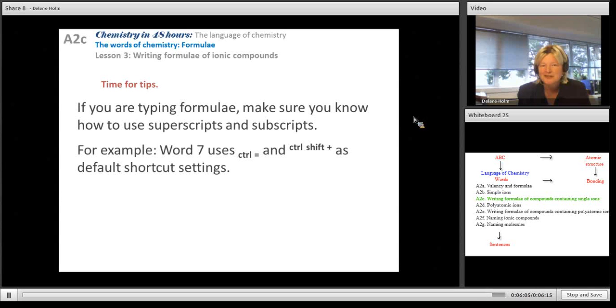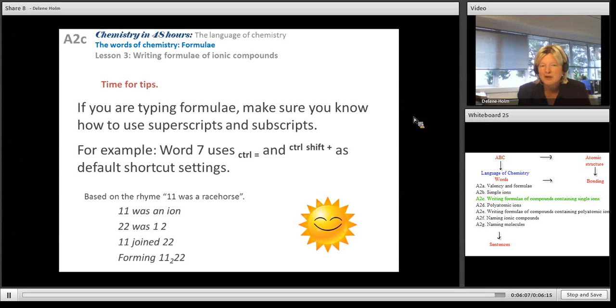And ending off with the joke. 1-1 was an iron. 2-2 was 1-2. 1-1 joined 2-2, forming 1-1-2-2-2. Goodbye. See you in the next lesson.